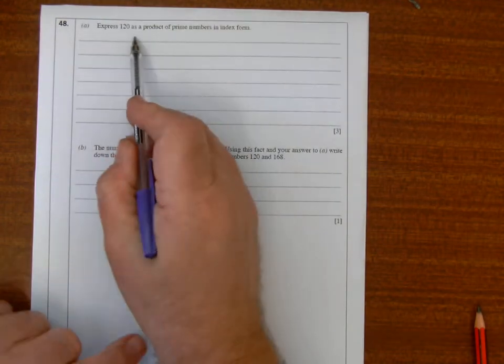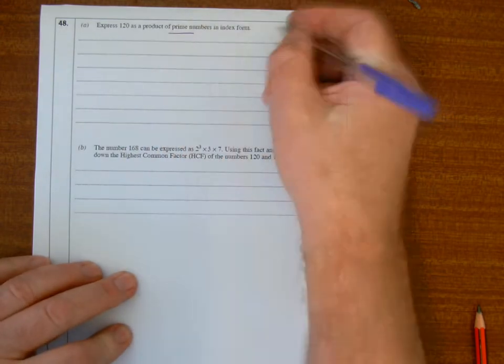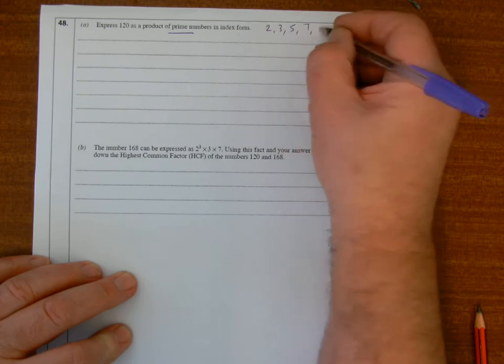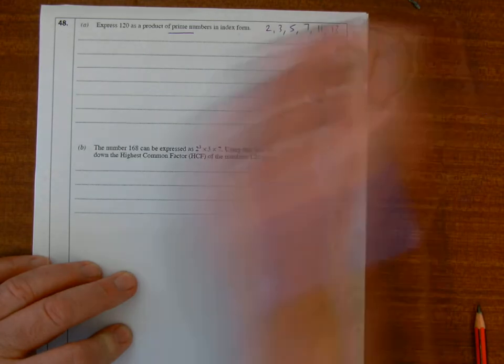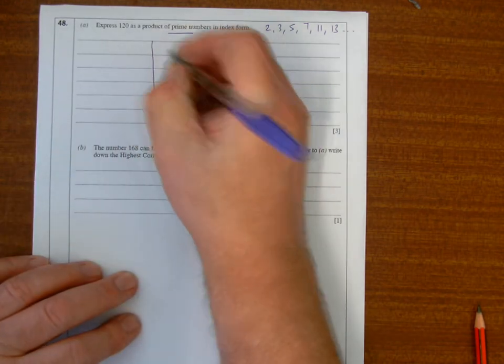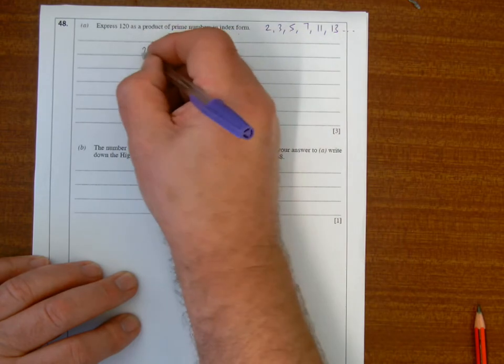We want to write this number as a product of prime factors in index form. Prime numbers are the only numbers that I'm able to divide by. So 120, there's a ladder method. I can divide 120 by 2.